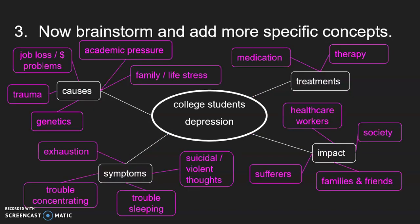Now you want to brainstorm about each of those subtopics and come up with some more specific concepts. For instance, in the causes branch of my map, I came up with a few things. Some causes for depression might be genetics, some kind of trauma the person has experienced, financials such as job loss or other money problems. Since we're talking about students, it might be academic pressure, family, or life stress. On the branch labeled impact, I thought about who is impacted: the students suffering depression themselves, probably their families and friends, and the healthcare workers they may interact with. And then what about society — how does society react to and support people experiencing this problem?